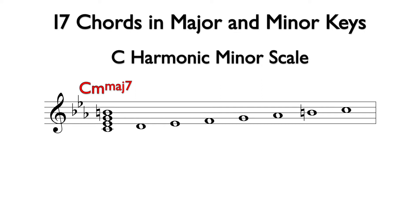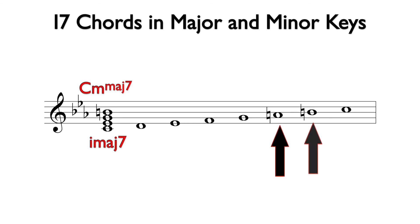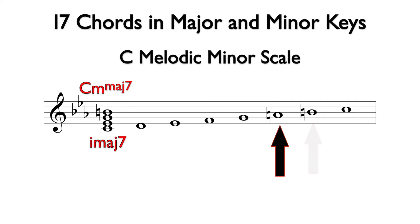The analysis is I minor major 7. If we raise both the 6th and 7th degrees of the natural minor scale, we have the ascending version of melodic minor. The raised 6th degree is not part of the I7 chord, so here we have a C minor major 7 chord, as in harmonic minor.